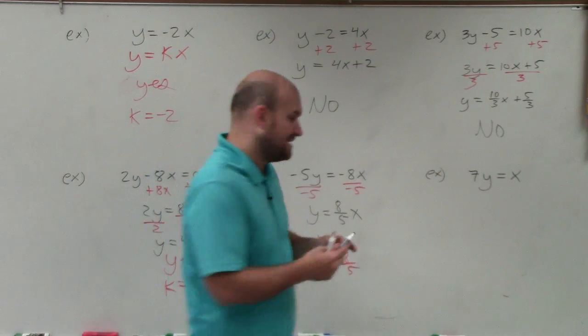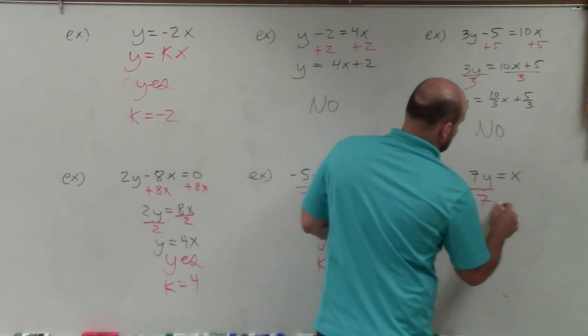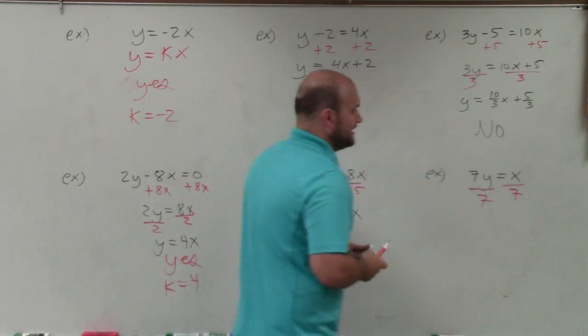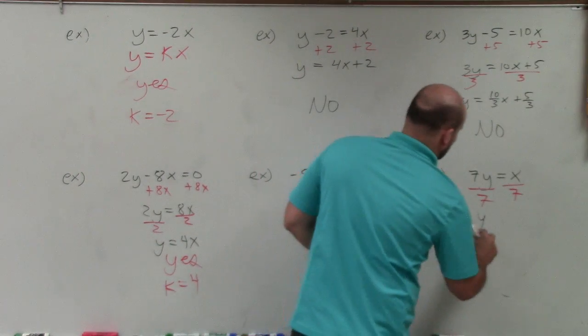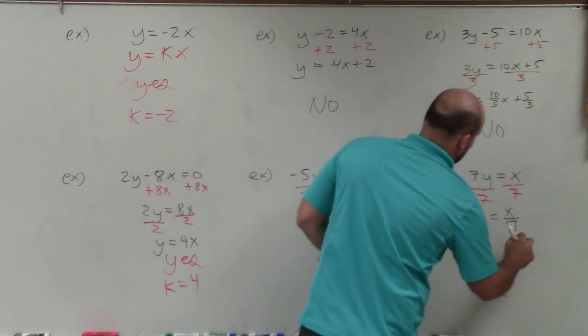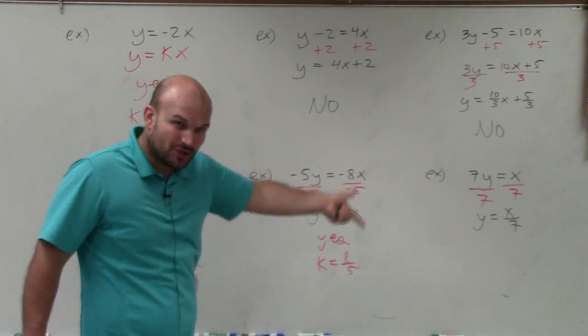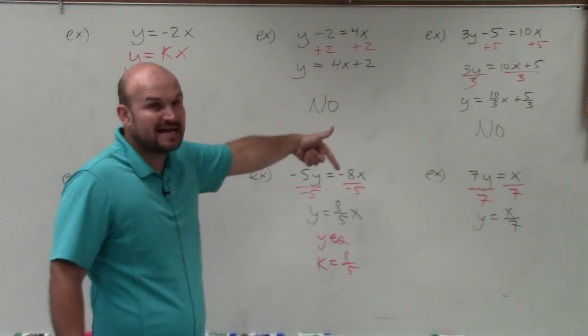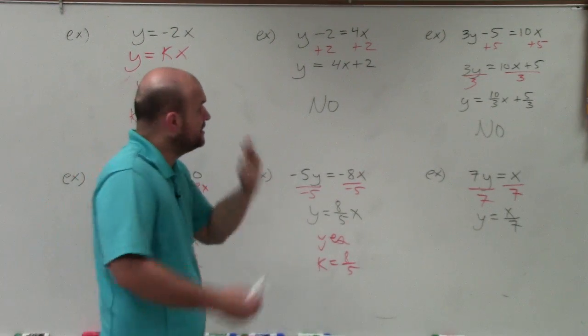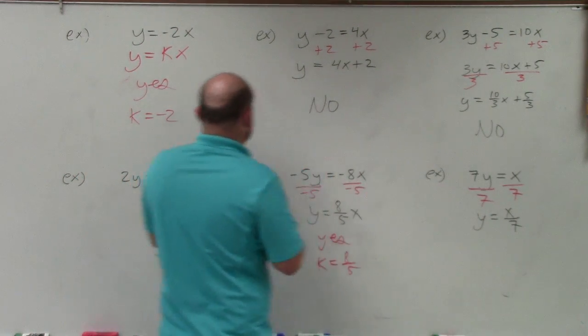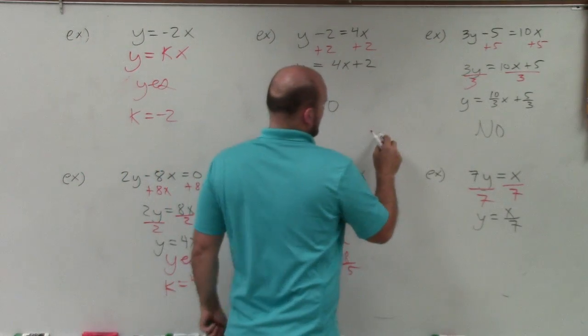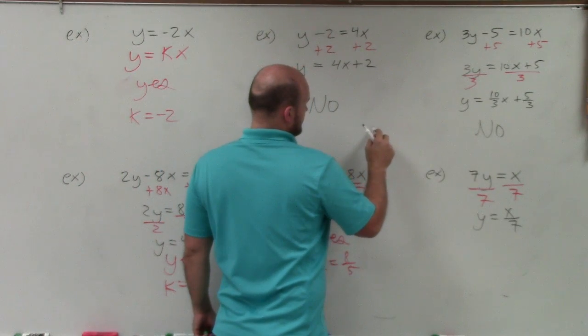And then over here, again, I have the same thing. I'm going to divide by 7. Now, you might get stuck here and say, well, OK, this is y equals x over 7. That is not an example of direct variation. You're correct in the way that you're looking at it, because you're not looking at it as multiplication. So it's very important for you to understand...